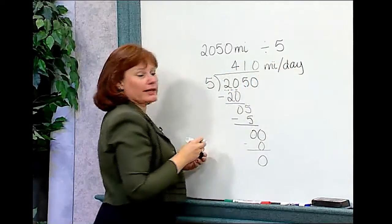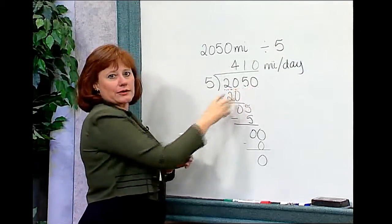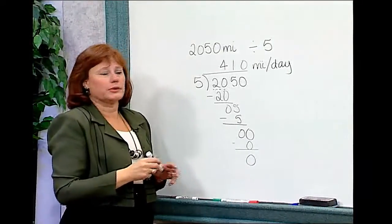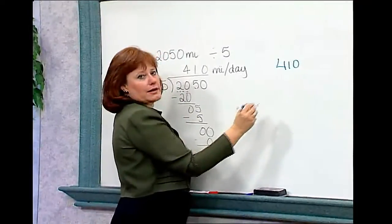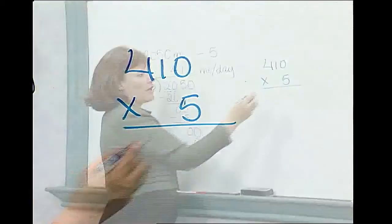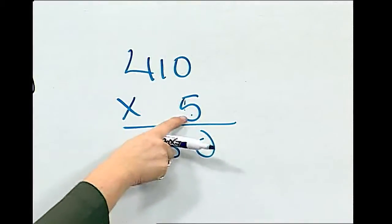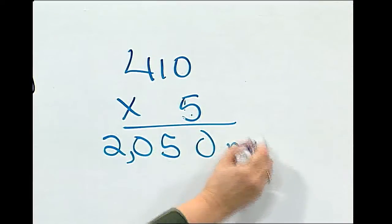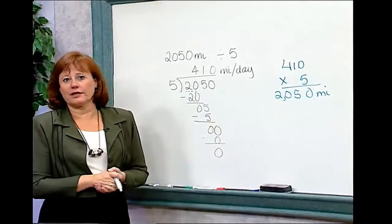Now we want to check our answer and make sure we did our division correctly, that we didn't lose any accuracy by accounting for those zeros. So we are going to multiply our quotient 410 miles per day, times the number of days, times five. Five times zero is zero. Five times one is five. And five times four is 20. So indeed our happy couple went 2,050 miles on their five day trip.